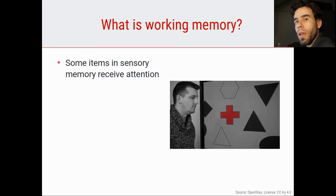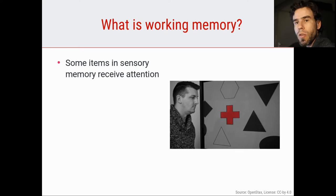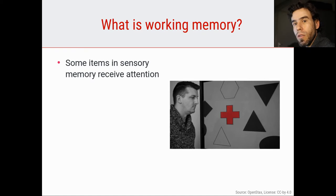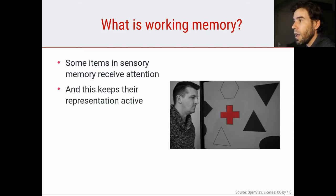So what is working memory? In the previous video, we've seen that basically all visual stimuli that we see briefly form a sensory memory. They sort of briefly reverberate in your visual brain areas, and the same is true for sounds that briefly reverberate in your auditory brain areas. As soon as we perceive something, we have a very brief sensory memory of it. Now, this sensory memory disappears after about one second. But what you can do is pay attention to some of the things that are in your sensory memory, and this paying attention keeps the representation of these items active.